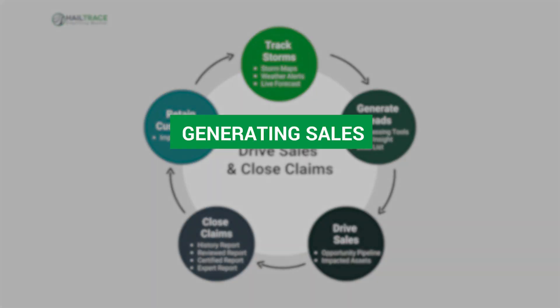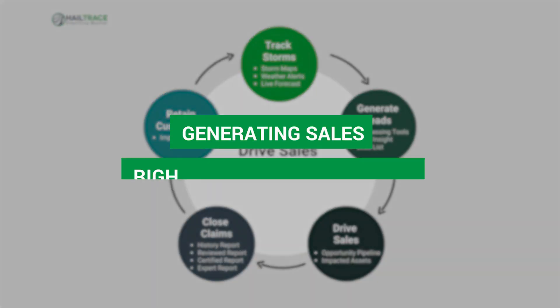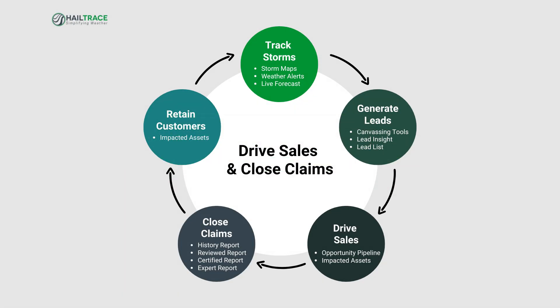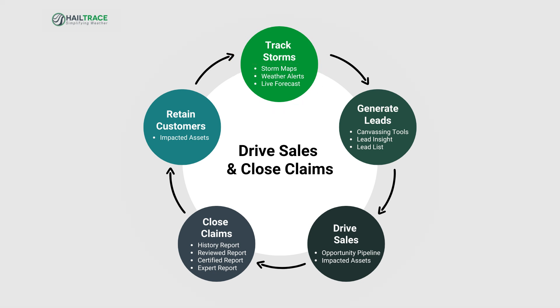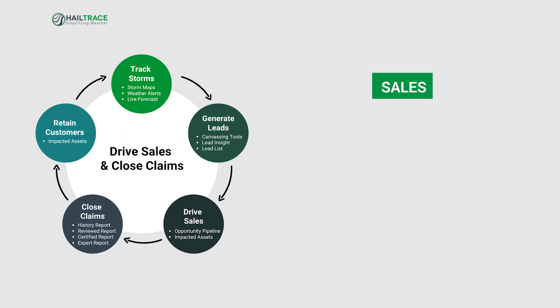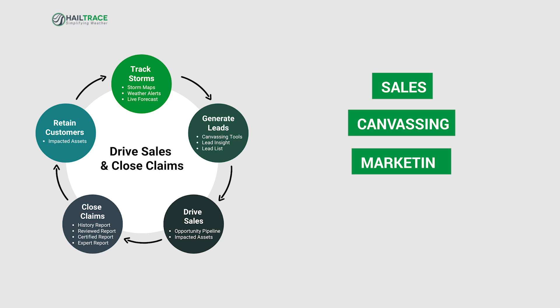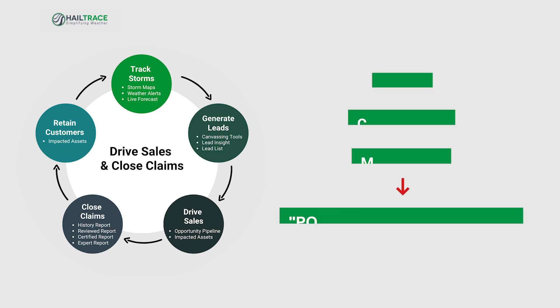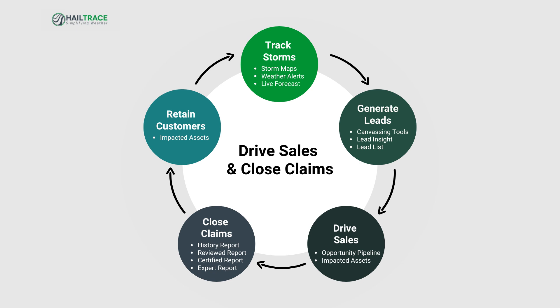In the process of generating sales, you need to get into the right neighborhoods that have been hit by a storm. And that is where our maps, also referred to as weather events, come into play. They allow sales, canvassing, and marketing teams to head into the right areas with potential storm damage. This data will help keep you and your teams from wasting precious time in the wrong neighborhoods, which ends up losing opportunities to competition.